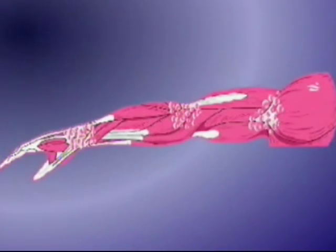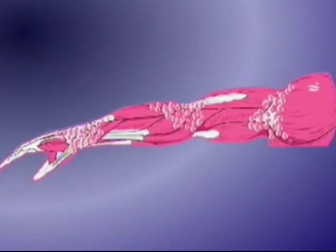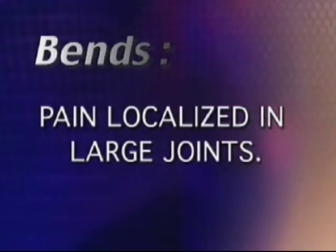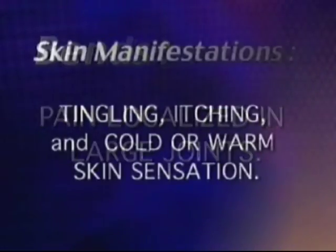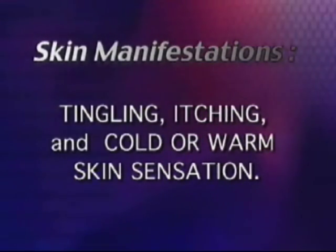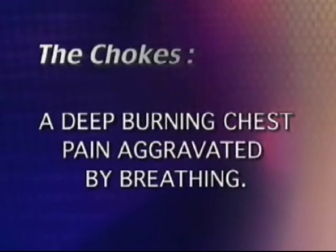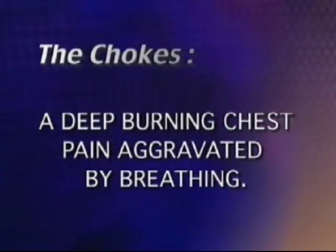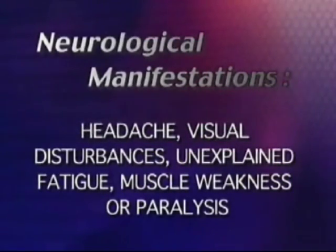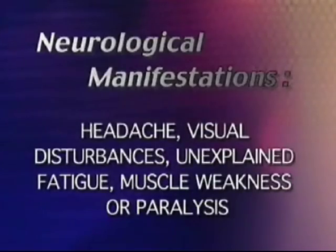Decompression sickness, also referred to as DCS, occurs when the body is exposed to decreased barometric pressure and the nitrogen dissolved in the body comes out of solution and forms bubbles. There are four types of DCS: the bends — pain localized in large joints; skin manifestations — tingling, itching, and cold or warm skin sensation; the chokes — a deep burning chest pain aggravated by breathing; and neurological manifestations — headache, visual disturbances, unexplained fatigue, muscle weakness, or paralysis.